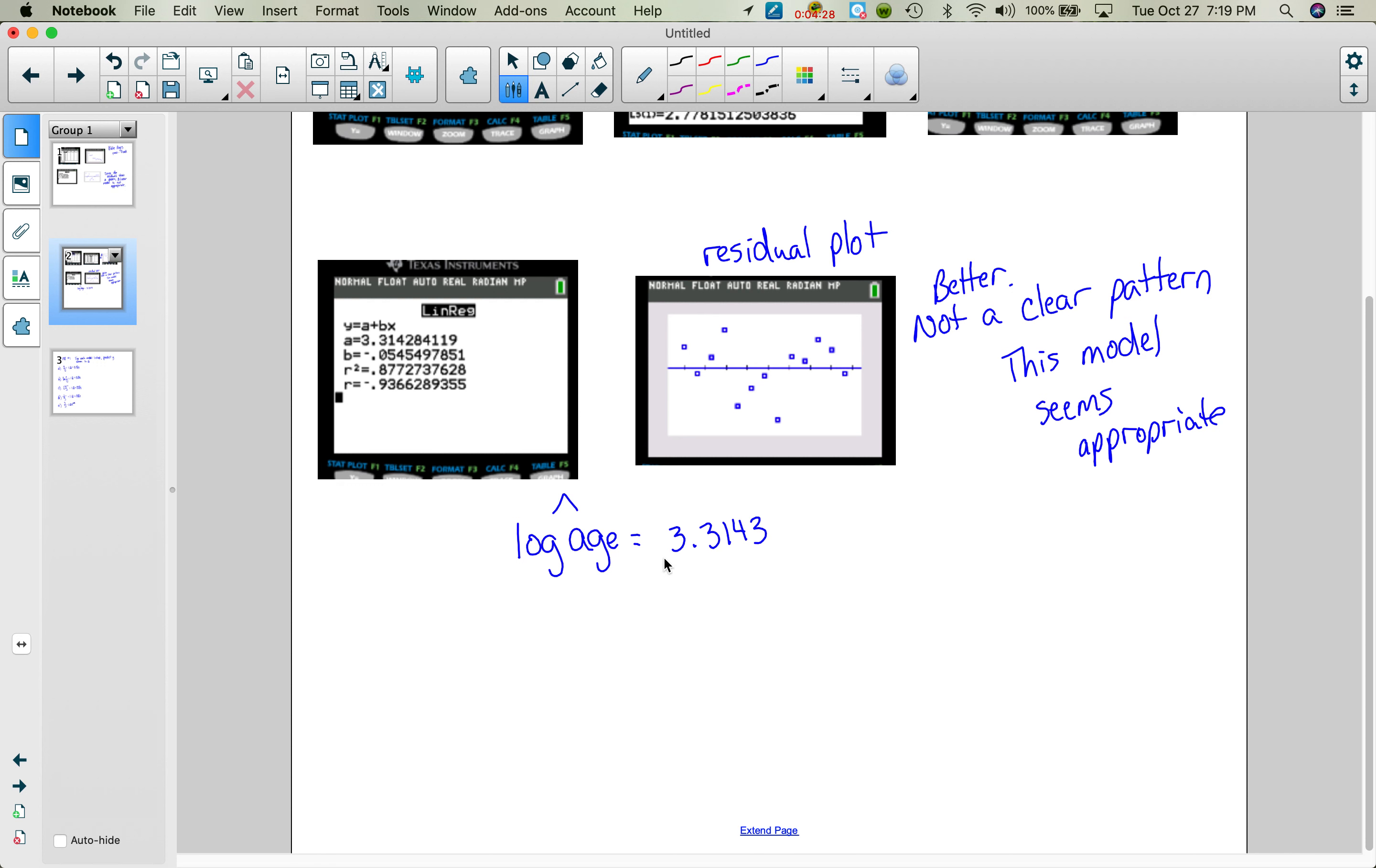You want to go more decimal places, especially when you're doing things with logs. Because you can just, if you don't go, if you just went to a 3.3, you're going to lose a lot of accuracy when you do your predictions. So you're better off, the less you round, the better. Minus .0545, because that's my slope. And then we had generation here.